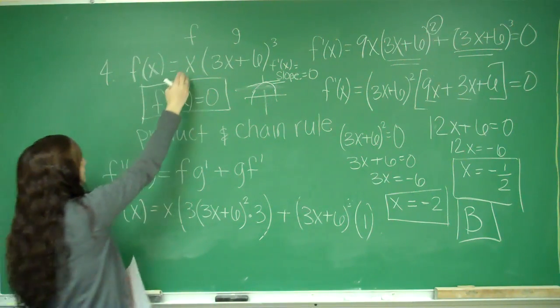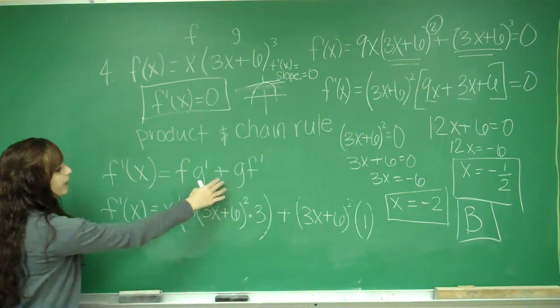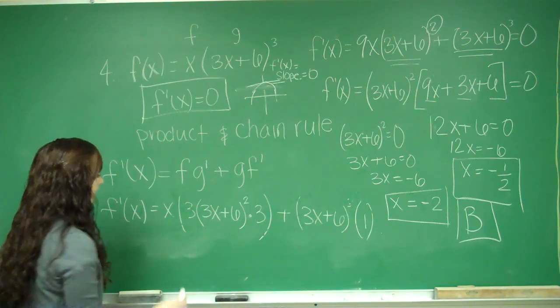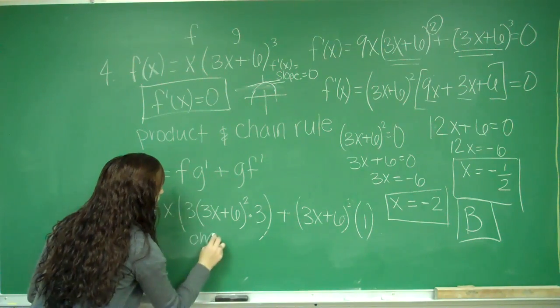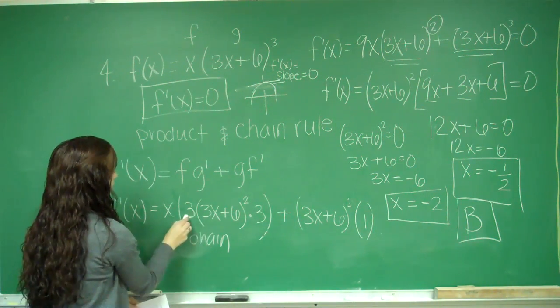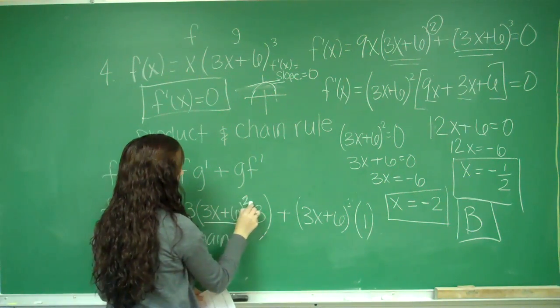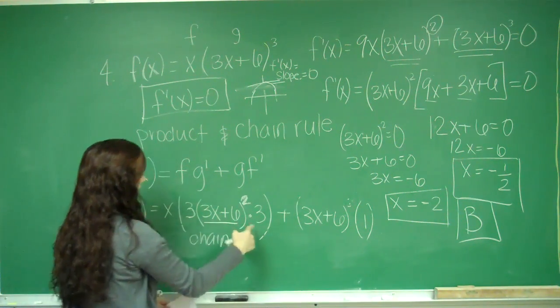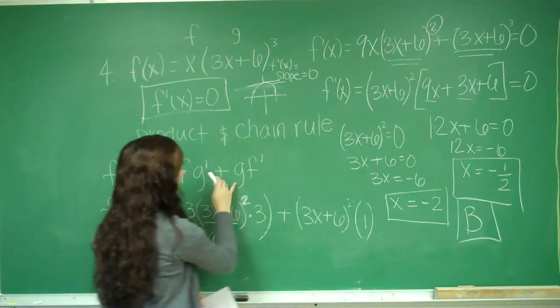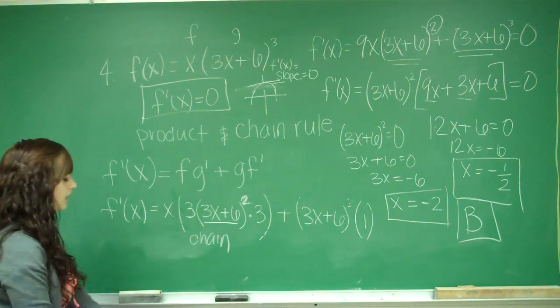So in order to find the derivative of this, I have to use product and chain rule. So this is my product rule. So my first times derivative of second. This is where chain rule comes in. So I brought down my exponent, my 3. I kept my inside the same. I subtracted 1 from my exponent and got squared. And then I multiplied by the derivative of the inside, which was 3. Then I added g and multiplied times the derivative of f, which was just 1.